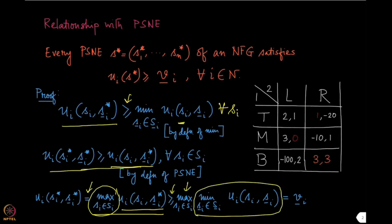Combining these two inequalities, we start from the left-hand side utility. By the best-response definition of Nash equilibrium, this equals the max over s_i of u_i at the Nash equilibrium. Applying the first inequality, this is greater than or equal to max over s_i of min over s_{-i} of u_i — which is exactly the maximin value v̄_i. This proves that the utility at the Nash equilibrium is at least as much as the maximin value.